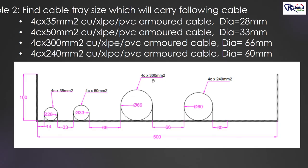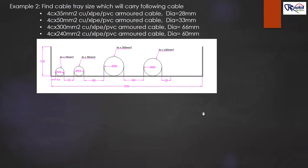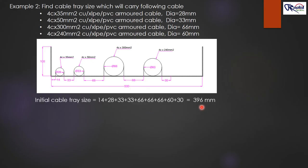For the 4-core 300 mm² and 4-core 240 mm² cables: the bigger cable is still 4-core 300 mm² with diameter 66 mm, so the distance between these two cables is 66 mm. On the right side, the distance between the last cable and the flange is half the diameter of that cable. After all spacing values are summed, the initial cable tray width totals 396 mm.